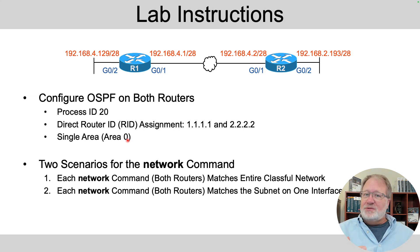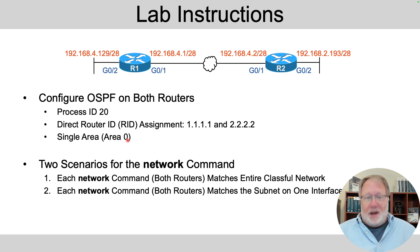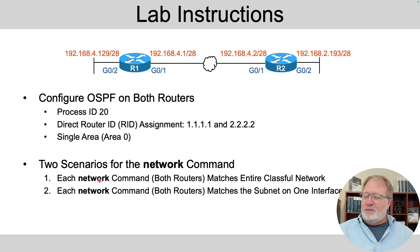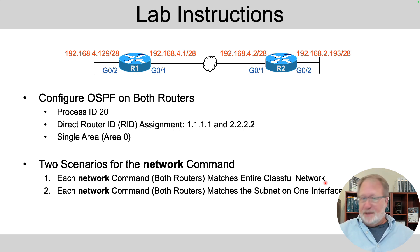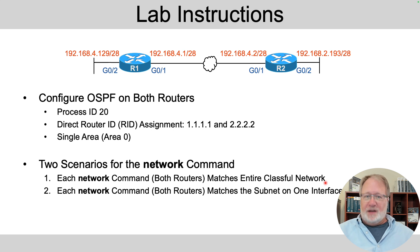The lab also asks you to configure two different ways with the network command, just to give you more practice with it. In the first scenario, each network command on both routers should match the entire classful network. Look at the IP addresses in the diagram and determine what class A, B, and C networks are in use, then devise network commands that would match all the addresses in whatever classful networks exist there. I'll leave that for you to figure out.